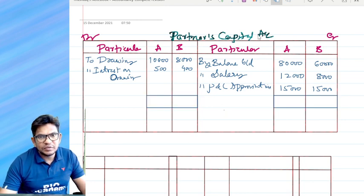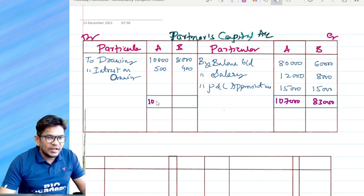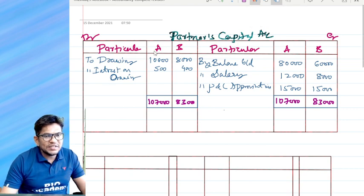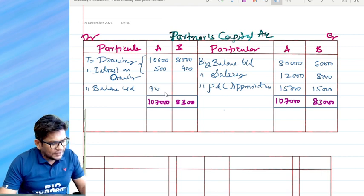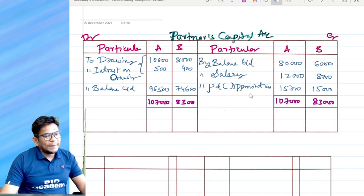Total comes to 1,07,000 and 83,000. You bring it here: 1,07,000 and 83,000. You will minus. You will just minus the numbers. By balance carried down, that is 96,500 and 74,600. This is done, five marks.